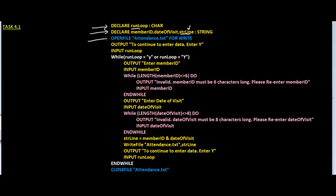I have opened the file — named attendance.txt — in write mode. This means a new file called attendance.txt is going to be created by the operating system and I will be able to write data into it. It is very important to close a file once you open it, so right at the very end, once I am done with all the code, I have made sure to close the file.